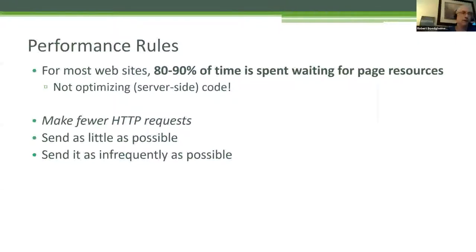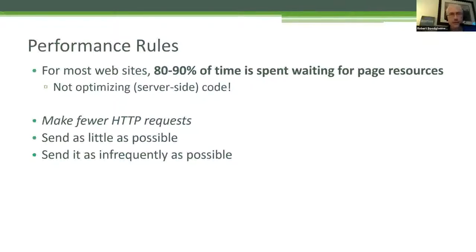It's typically not optimizing server-side or backend code for APIs and such. It's possible that you have a slow backend, but if you're like most websites, it's all the other things you're downloading that we need to worry about. The first performance rule is make fewer requests. In the HTTP 1.1 world, we would purposely do things like bundling. Now that HTTP 2 is out, those techniques are less important, but obviously still don't request stuff you don't need.